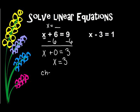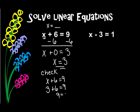Now I want to check my answer — I want to make sure that this is correct. So I write my original equation: x plus 6 equals 9. And I know what x is — x is 3. So since x is 3, I'm going to say 3 plus 6 equals 9. And 9 equals 9. Since that is true, I know that I did this right, and x equals 3 is my answer.